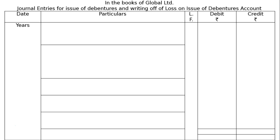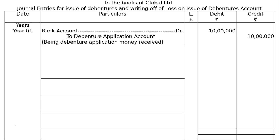First entry: Bank account debited to debenture application account. Being debenture application money received on 10,000 debentures of Rs 100 each, that is Rs 10 lakhs.